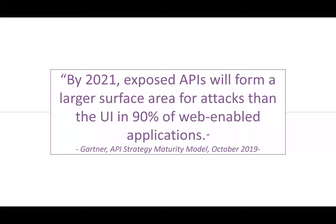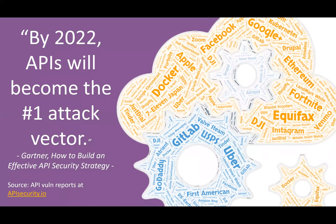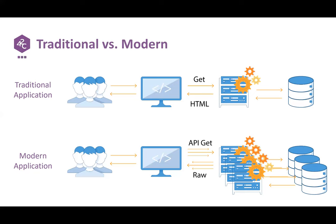Gartner is also expecting that by 2022, APIs will become the number one attack vector overall. And this is already happening — if you've been looking at cybersecurity reports and news lately, you've seen a lot of API-related attacks and breaches over the last few months. That's the reason why API security is so important.